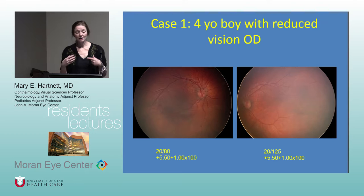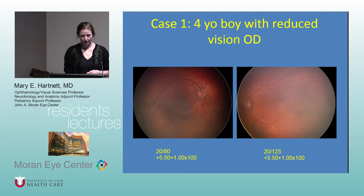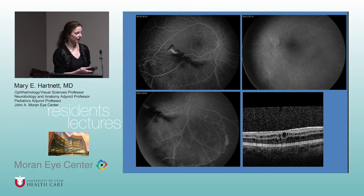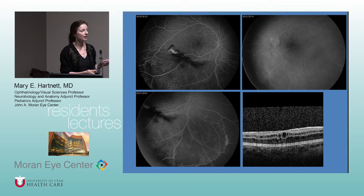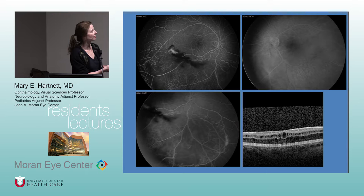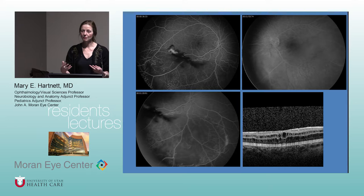Now some cases. Case one: a four-year-old boy with reduced vision in the right eye. Looking at his retinas — he's hyperopic, had a little bit of hemorrhage on fluorescein angiography, and here is his OCT. Does anyone have any idea? It's X-linked retinoschisis — excellent. He has a mutation in RS1. There can be several reasons these kids develop neovascularization — it may be because of avascular retina within the schisis area, or the vitreous hemorrhage can be because the schisis is splitting of the retina, putting tension on retinal vessels.